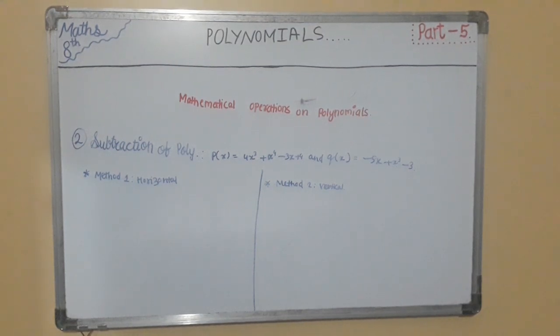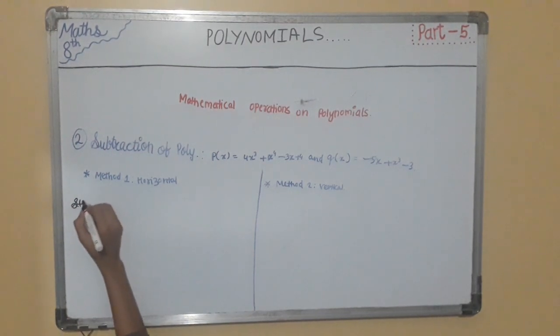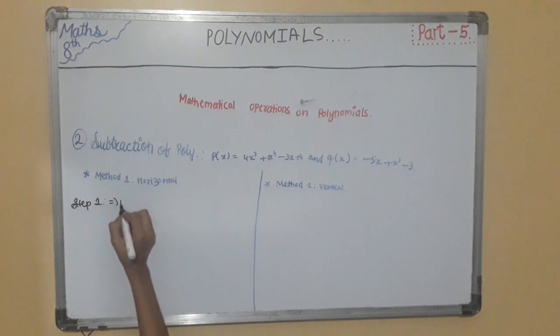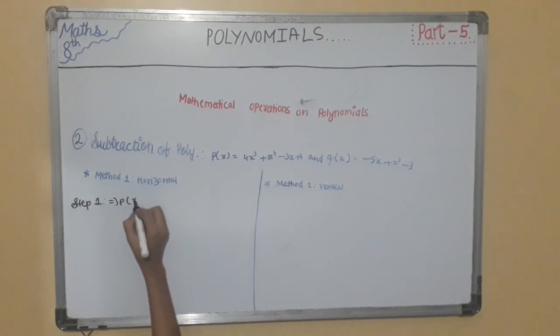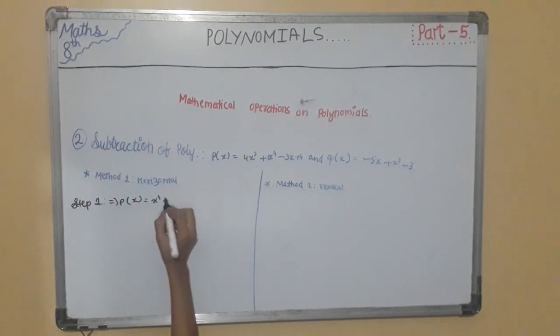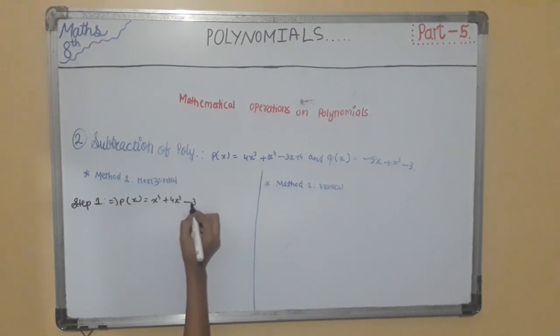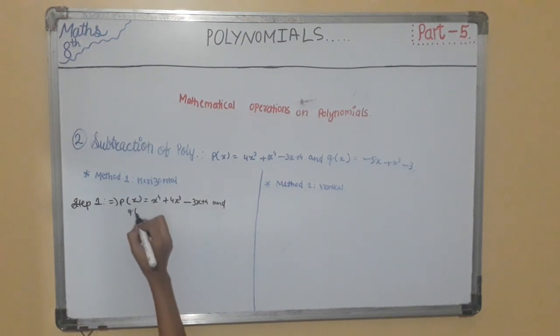We will start by an example. Step 1: Arrange the terms of the given polynomials according to the descending order or ascending order of their powers as required. P(x) = x⁴ + 4x³ - 3x + 4 and Q(x) = x³ - 5x - 3.